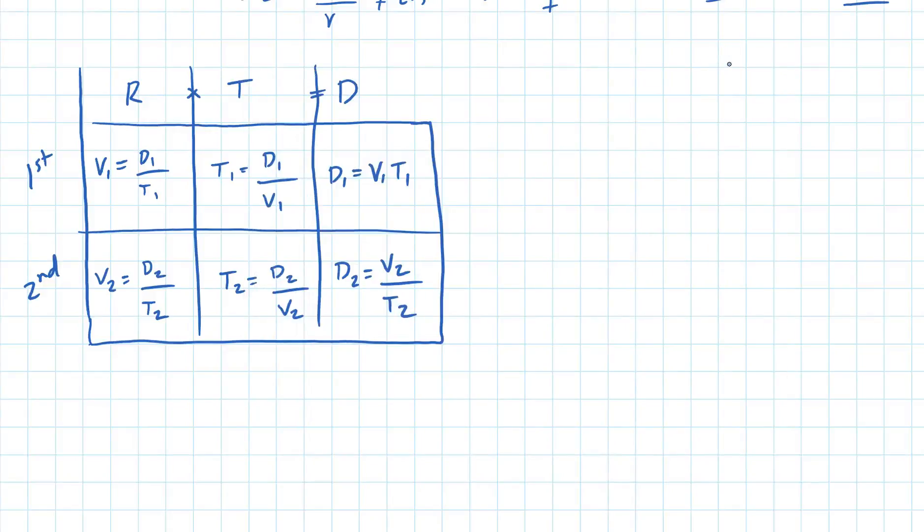I used rate times time equals distance to solve this problem. The first thing I figured out is the time that it took the first traveler to equal the time that it took the second traveler. You had to add 2.5 hours to the first traveler, so that was one equation that I came up with.